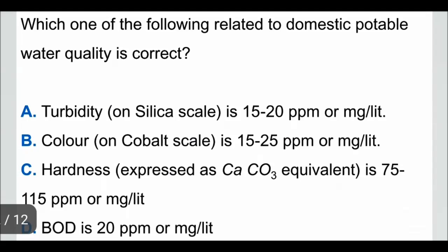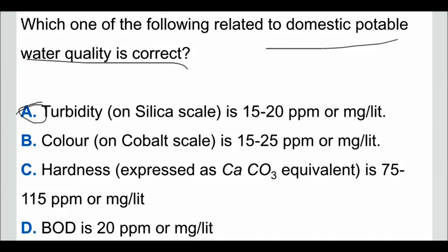The first question is: which one of the following related to domestic portable water quality is correct? They will give four limits and ask which one is correctly matched according to domestic portable water quality. Option A: turbidity on silica scale is 15 to 20 ppm or milligram per liter. According to domestic portable water quality, the turbidity is limited to 5 ppm, so option A is not correct.